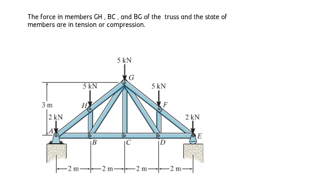In this question we have to find the force in member GH, the force in member BC, and the force in member BG of the given truss, and also determine whether this force is a tension force or a compression force. The method we are going to use is the section method.